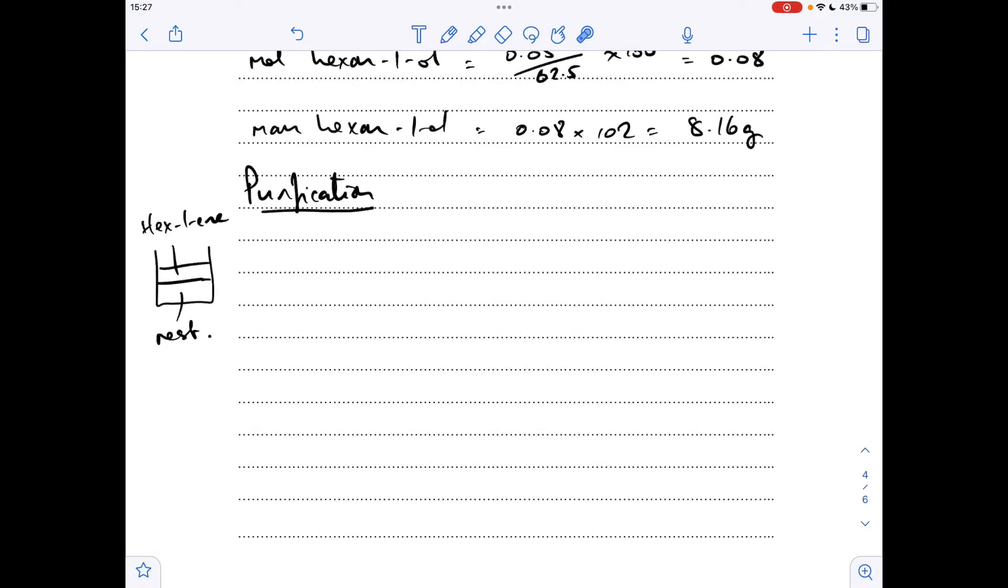Moving on to the purification stage. After reflux we're told the mixture contains hex-1-ene, hexan-1-ol, and water. You'll notice I've got these two layers here. The upper layer is going to be the hex-1-ene because it has the lower density. The alcohol and the water are going to merge together in this higher density lower layer.